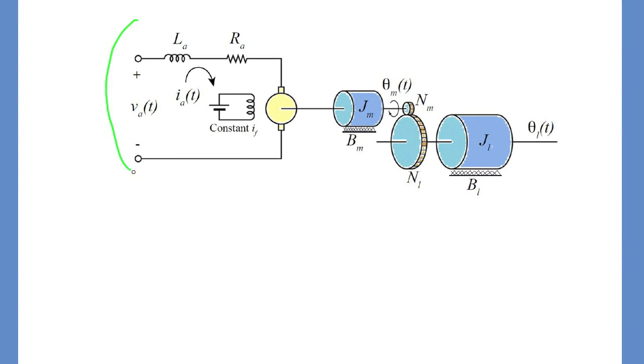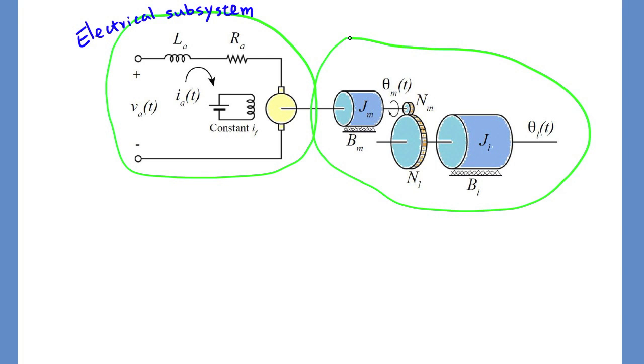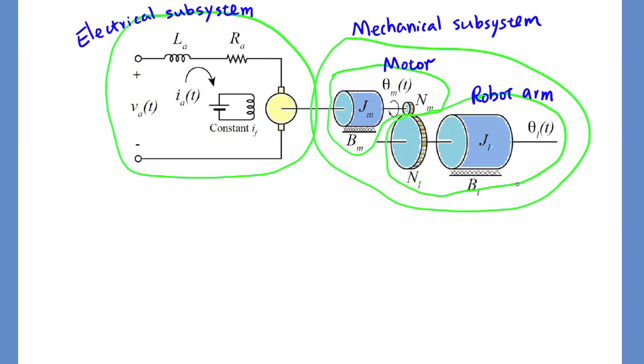We know this is a coupled electrical mechanical system. The electric motor drives the smaller motor gear, which further drives the larger robot arm load gear. So here is a mechanical subsystem which includes the motor with gear Nm attached. Here is a robot arm rotational system.